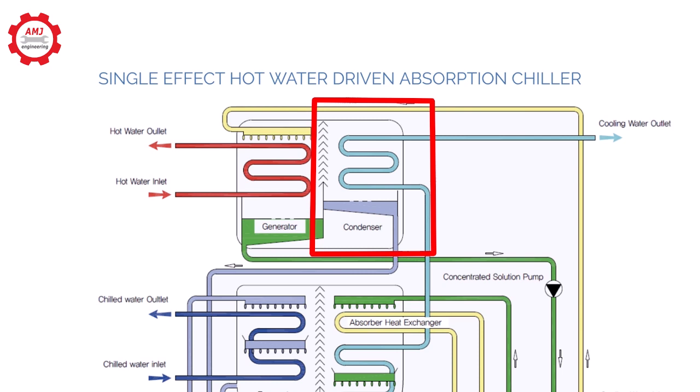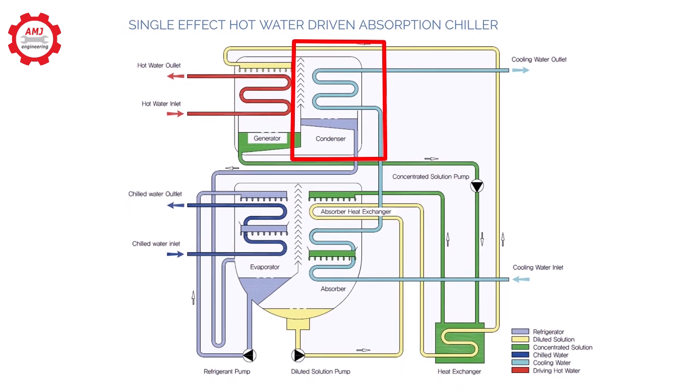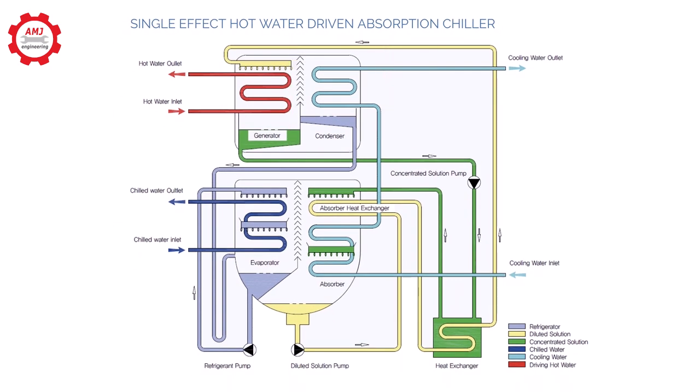Next step: the condenser. The refrigerant vapor released in the generator is drawn into the condenser. Cooling water cools and condenses the refrigerant. Heat will be rejected from the condenser to the cooling tower stream.